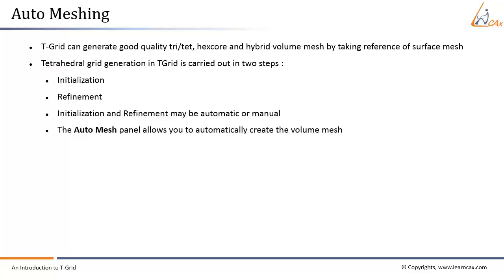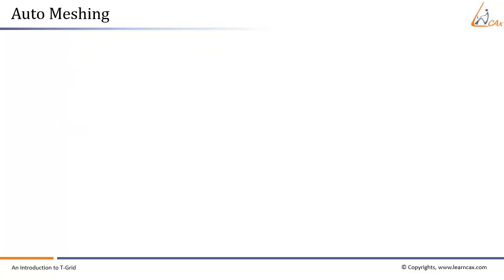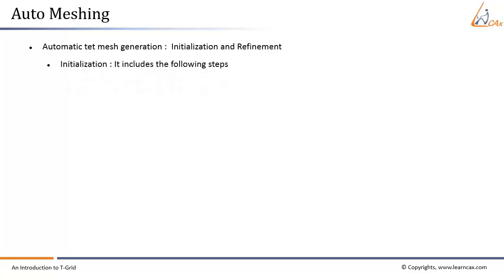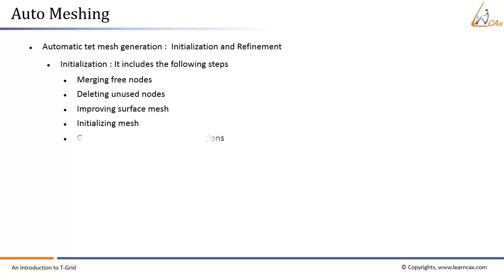The Auto Mesh panel allows you to automatically create the volume mesh. The automatic tet mesh generation process is divided into two fundamental tasks: initialization and refinement. Initialization includes the following steps: merging free nodes, deleting unused nodes, improving surface mesh, initializing mesh, and generating and separating cell regions.